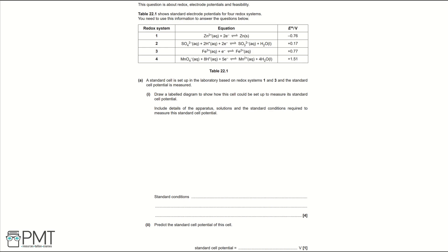A standard cell is set up in the laboratory based on redox systems 2 and 3 and the standard cell potential is measured. Part 1: Draw a labelled diagram to show how this cell could be set up to measure its standard cell potential. Include details of the apparatus, solutions and the standard conditions required to measure this standard cell potential. This is a very common question so once I've shown you the correct answer it's a good idea to make a revision resource and go back over this.